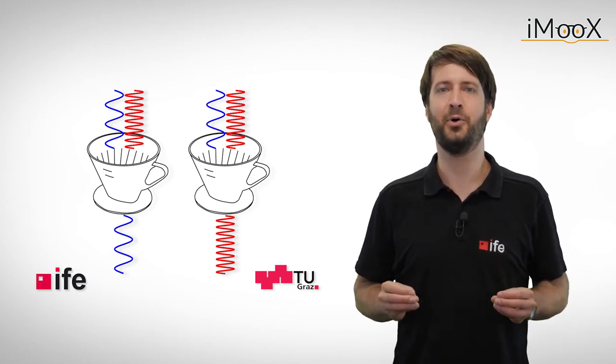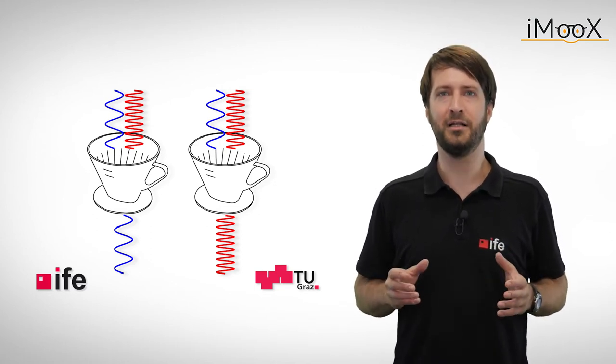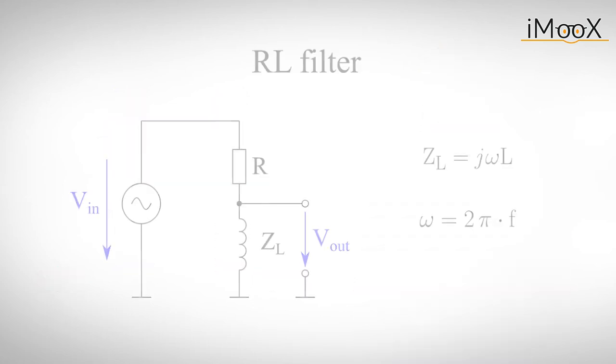Fortunately, there is another important, yet little more bulky passive component, which can help us to solve this problem, the inductor. Just like with the capacitor in our last video, we can connect a resistor and an inductor in series, which will give us a simple high pass filter.